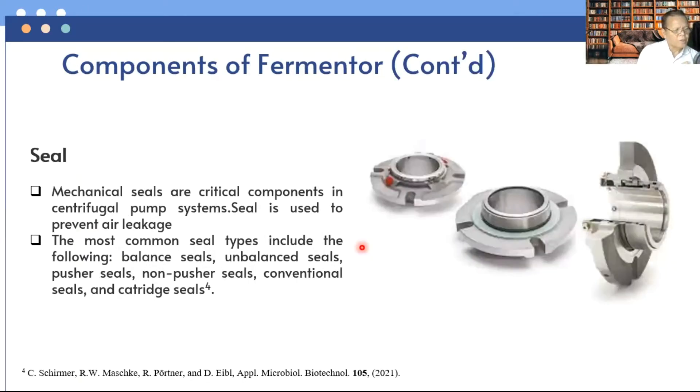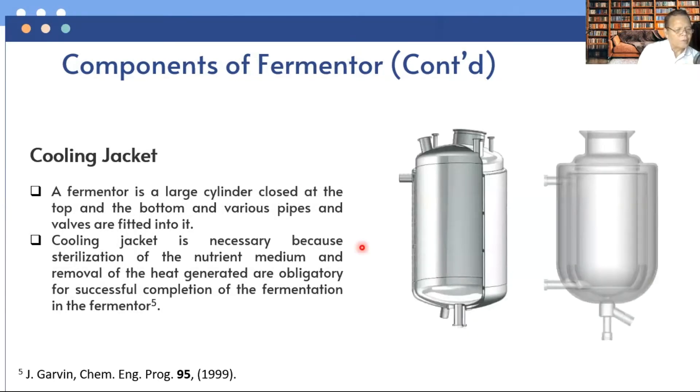Then seal. Mechanical seals are a critical component in the centrifugal pump system. Seal is used to prevent air leak. This device preserves the integrity of the pump system by preventing leaks and keeping contaminants out. The most common seal types include balanced seal, unbalanced seal, pusher seal, non-pusher seal, conventional seal, and cartridge seal.